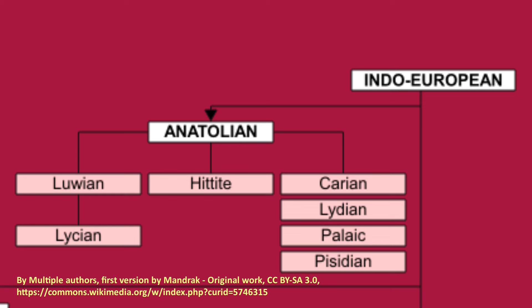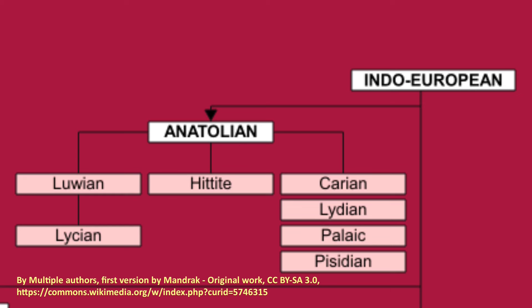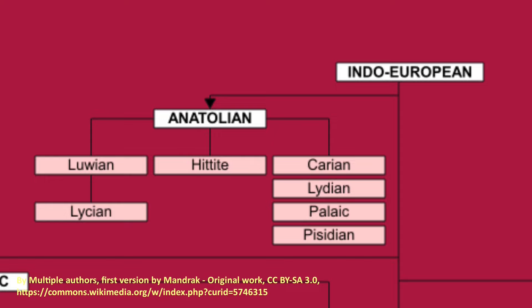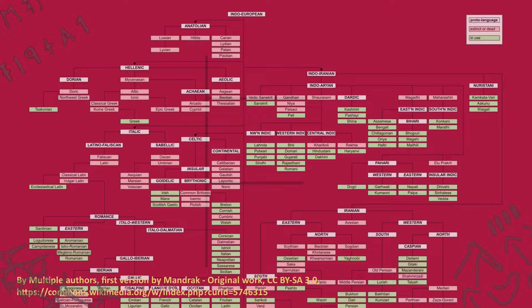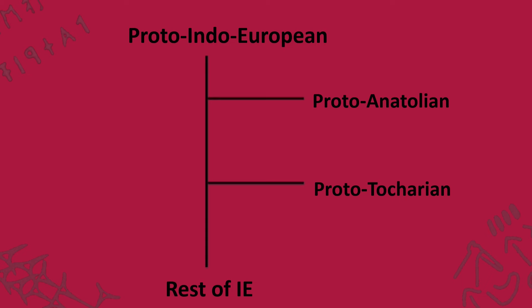Firstly, let's talk about what exactly is the relationship between Anatolian and Proto-Indo-European, because that in itself is heavily discussed. Most commonly you can see the relationship between the various Indo-European languages as a tree model, most of which show something like this: the Anatolian languages branched off first and Tocharian second.